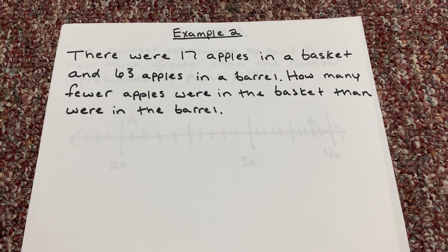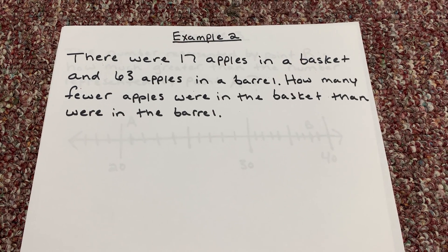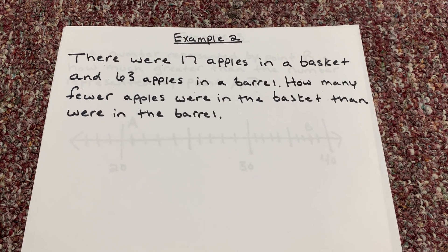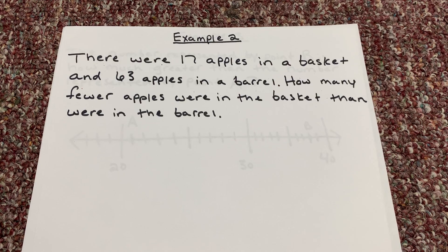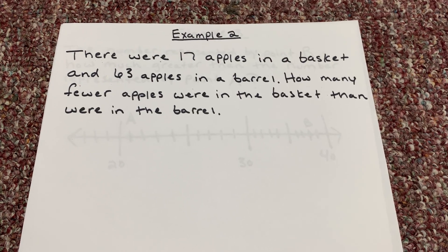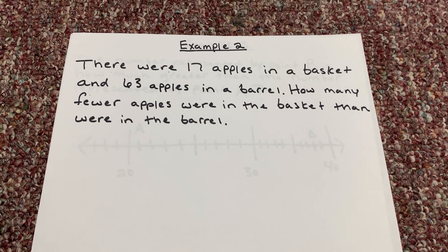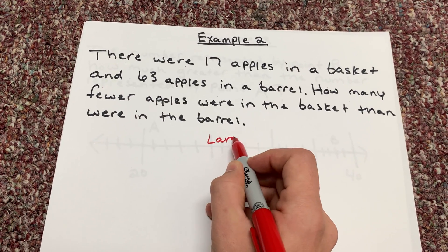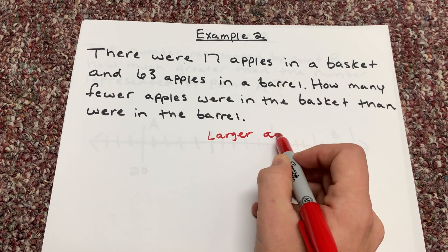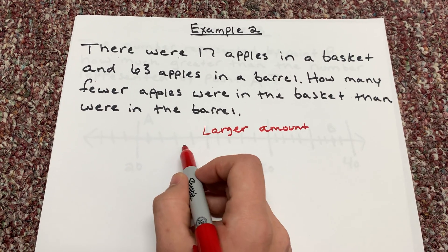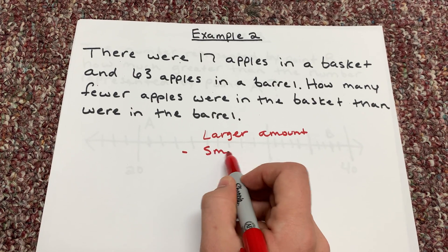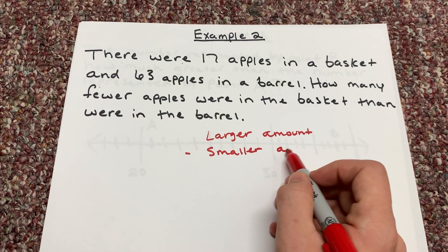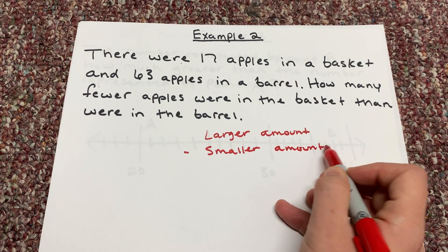Let's look at Example 2. It says: there are 17 apples in a basket and 63 apples in a barrel. How many fewer apples were in the basket than were in the barrel? Again, following the same formula, 4th grade — we're going to find our larger amount first, then find our smaller amount, and subtract to find the difference.